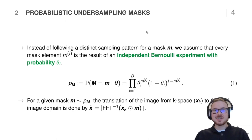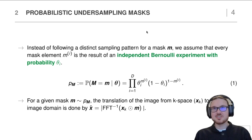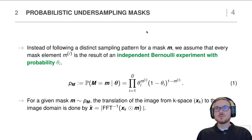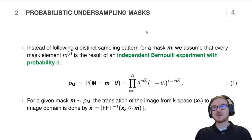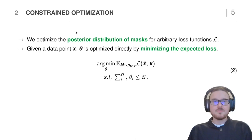As a first assumption, instead of following a distinct sampling pattern for a mask m, we assume that every mask element is the result of an independent Bernoulli experiment, where each point has an individual probability theta, and exactly this distribution will be our optimization objective. If we sample some mask from this distribution, we can simulate the undersampled image by taking a k-space array, applying the mask via the Hadamard product, applying the inverse Fourier transform, and obtaining the magnitude image. This also defines our optimization routine.